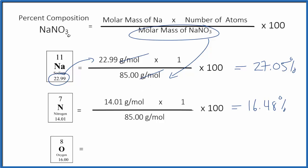Pause and figure out the percent composition of oxygen in NaNO3. So we have 16.00, we multiply that by three, since we have three oxygen atoms.